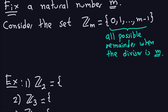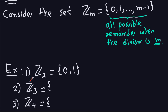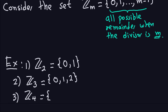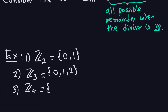Let's look at some examples. Z2 is the collection of all possible remainders when you divide by two: you get remainder zero or remainder one, and that's it. Z3 is all possible remainders when dividing by three: zero, one, and two. Z4 is all possible remainders when dividing by four: zero, one, two, and three. For any M, you write down the list starting from zero up to M minus one.